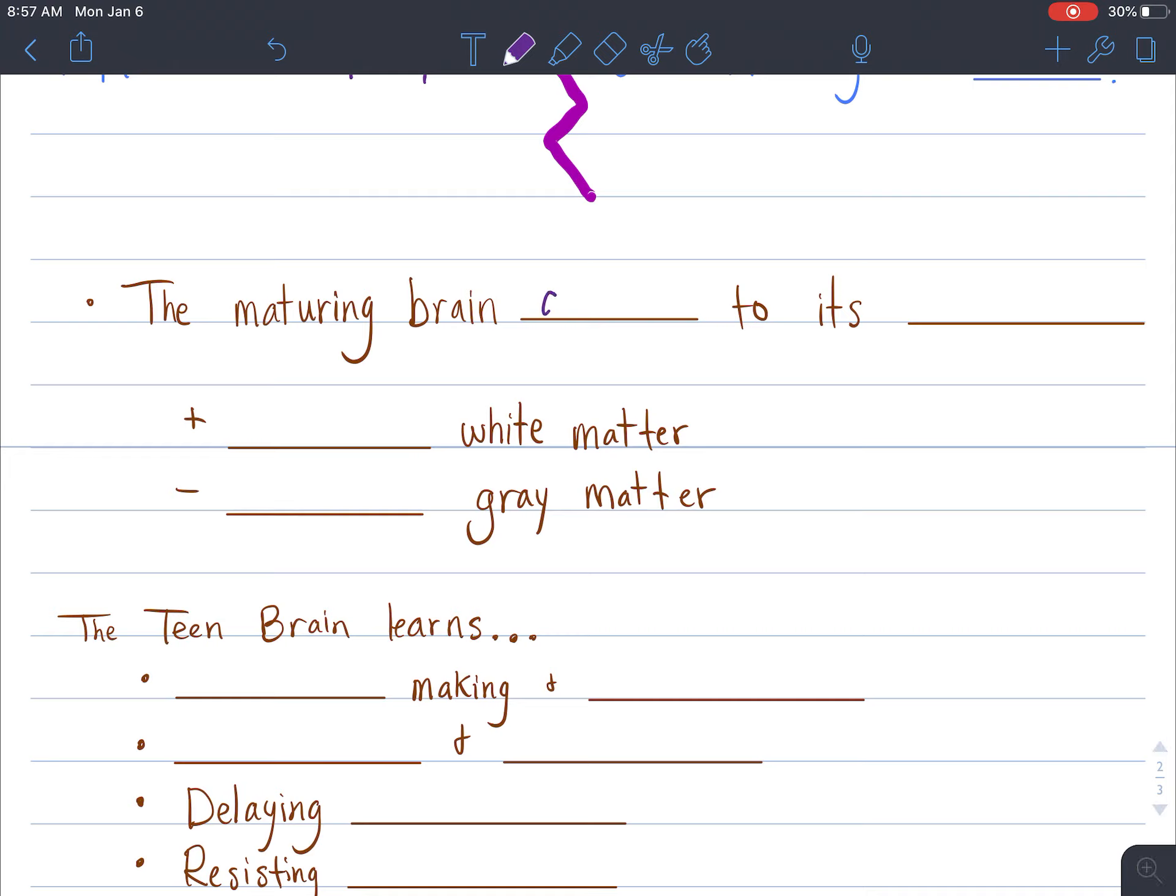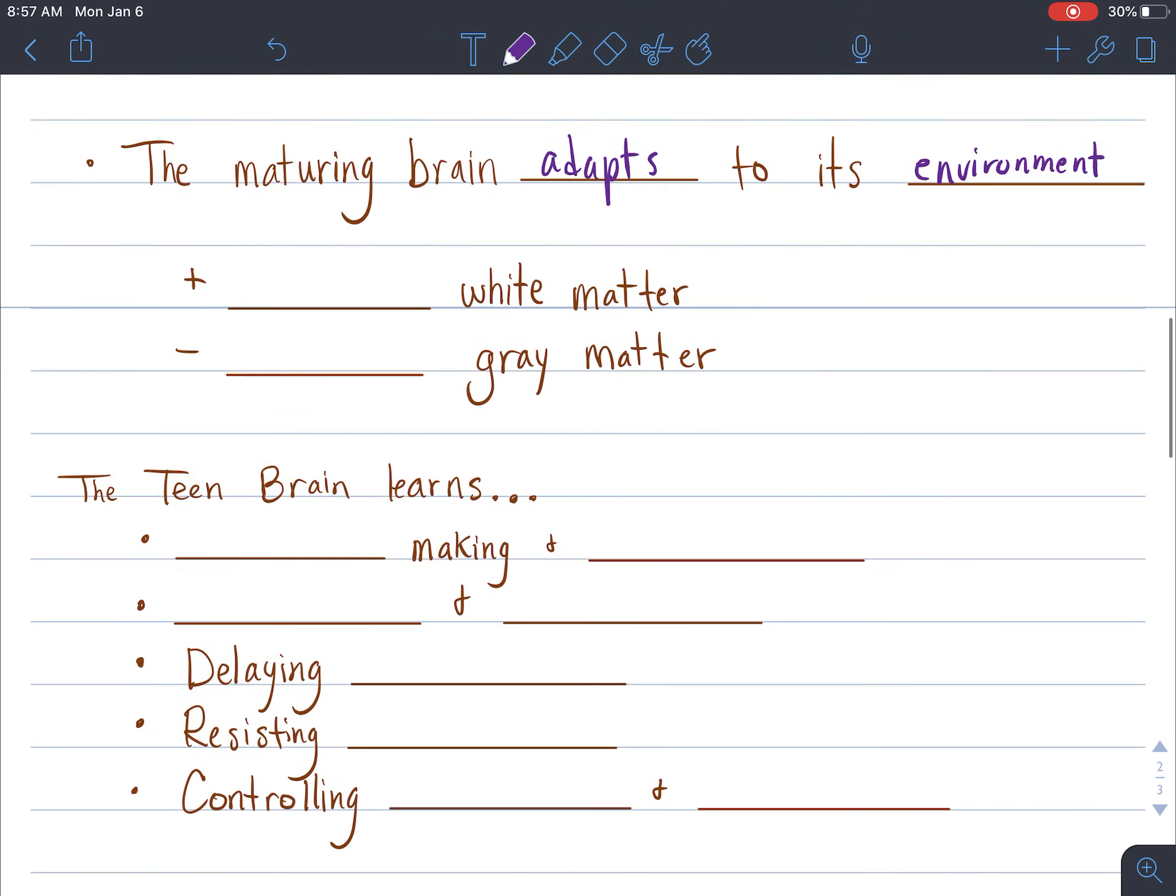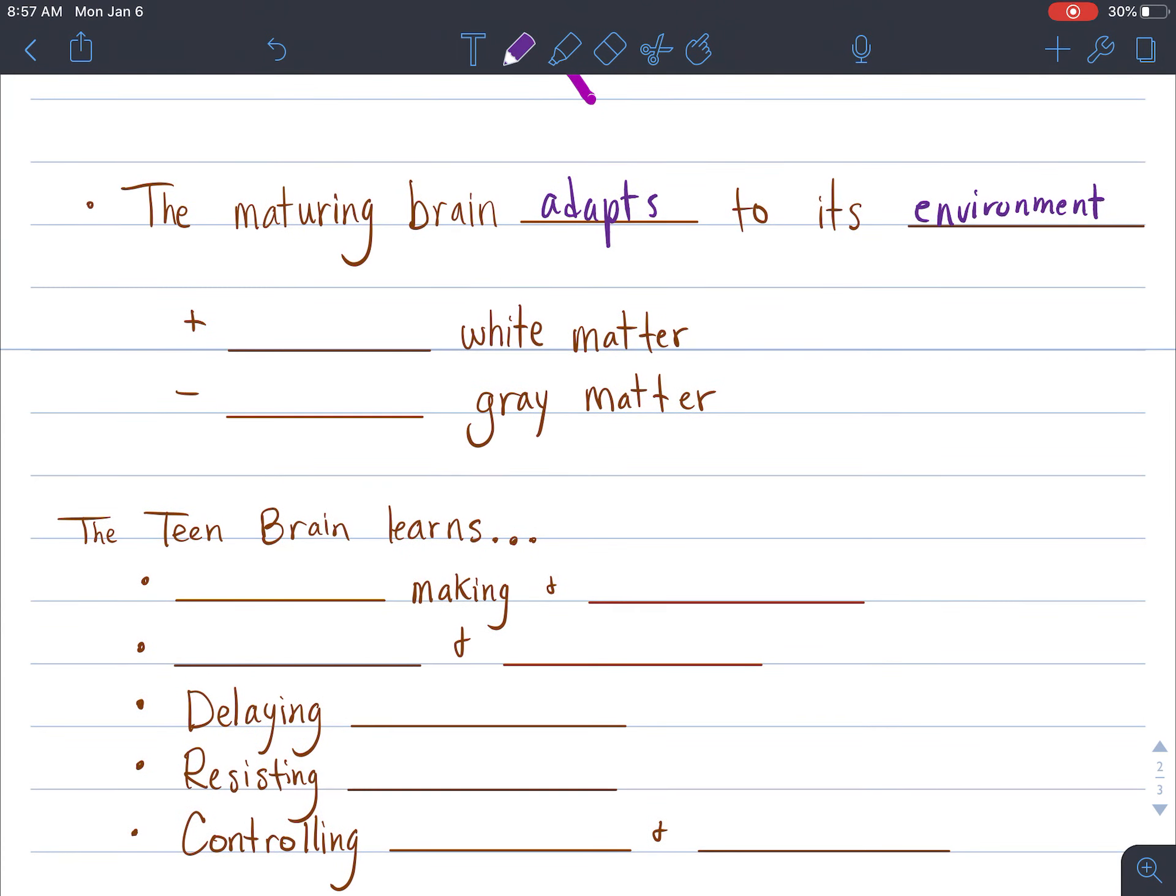As we mature and as our brain learns and grows, our maturing brain is going to adapt to its environment. One thing that your maturing brain does is that it understands the culture and customs of the area around you as well as the language.